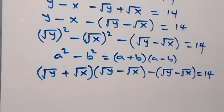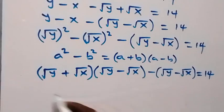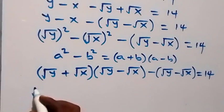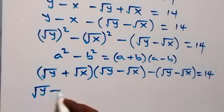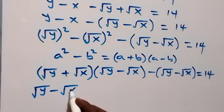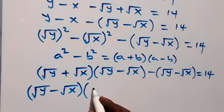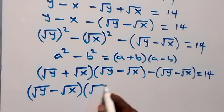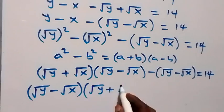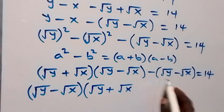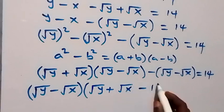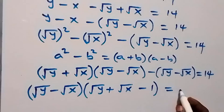Now, from here we have (√y minus √x) common. So we can factor that out and we have (√y minus √x) then into bracket, what is left here is (√y + √x) and what is left here is minus 1, close bracket, equals to 14.